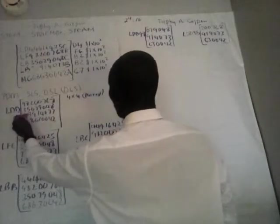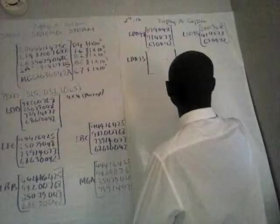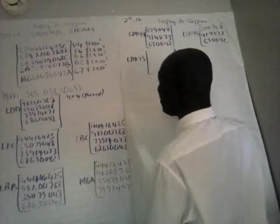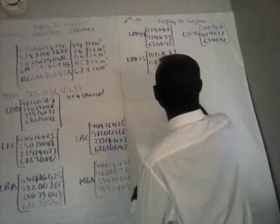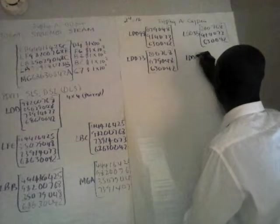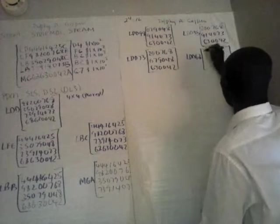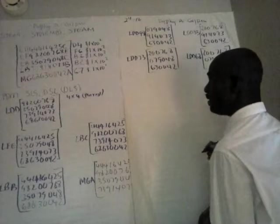We call this exponential generation. The next pair will be LDD 73. For LDD 73 we have 2768, 079048, and the center stream 630042. Next we move to LDD 68, for which we have 2768, 079048, and 914073.